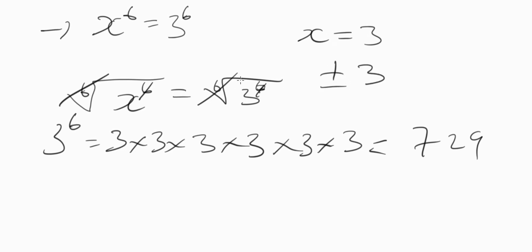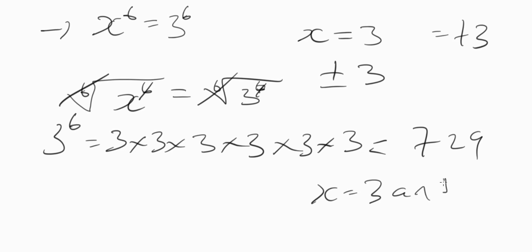Actually, the value of x is meant to be plus or minus 3, because of the even root. Normally we take the positive value, which is plus 3. So the solution to the equation x to the power of 6 equals 3 to the power of 6 is x equals 3 and x equals negative 3.